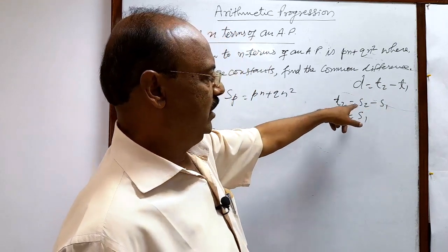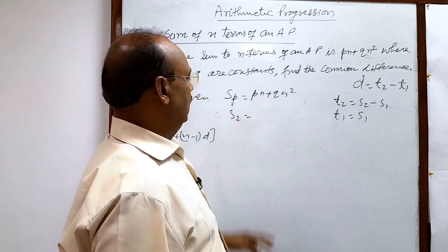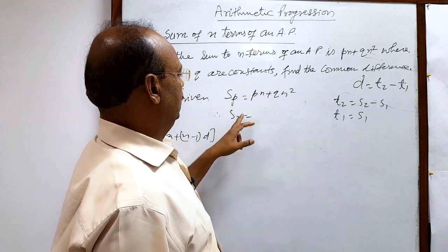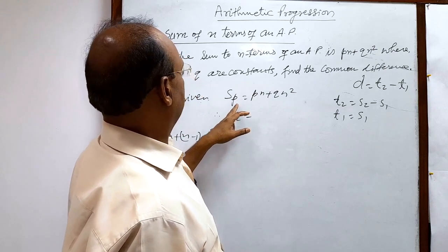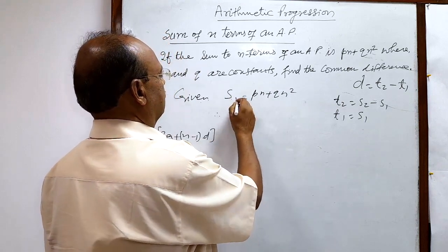Let us try to get S2 and S1. Therefore S2 is equal to how much? In place of n we are—sorry, sorry there is a mistake, sum of n terms. So this is Sn, fine.